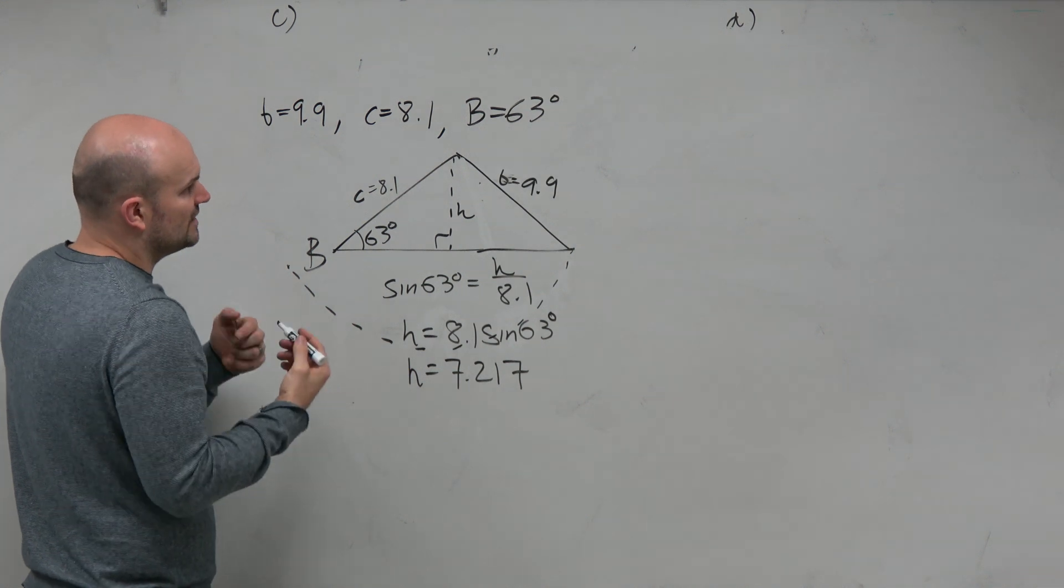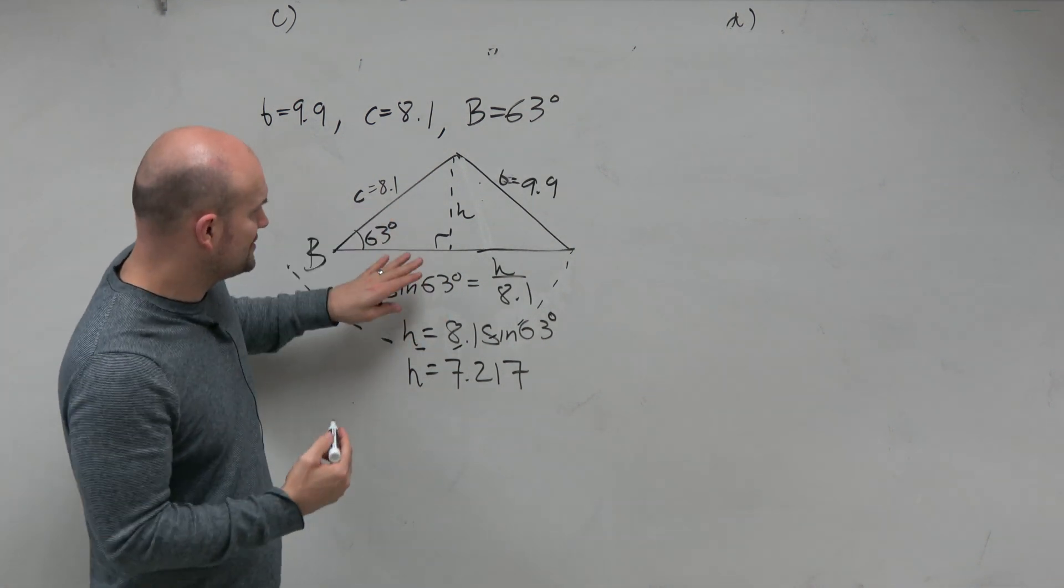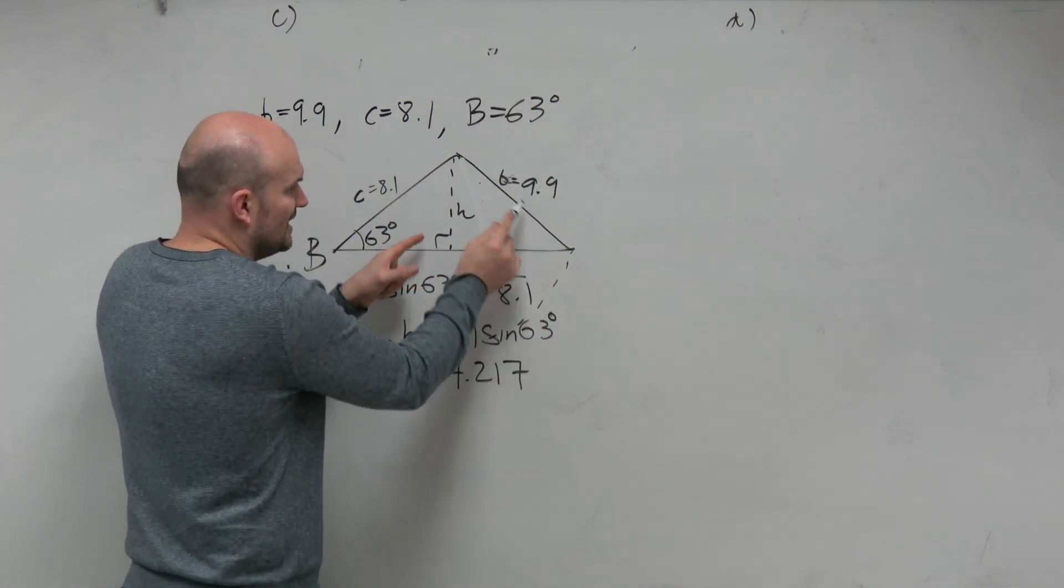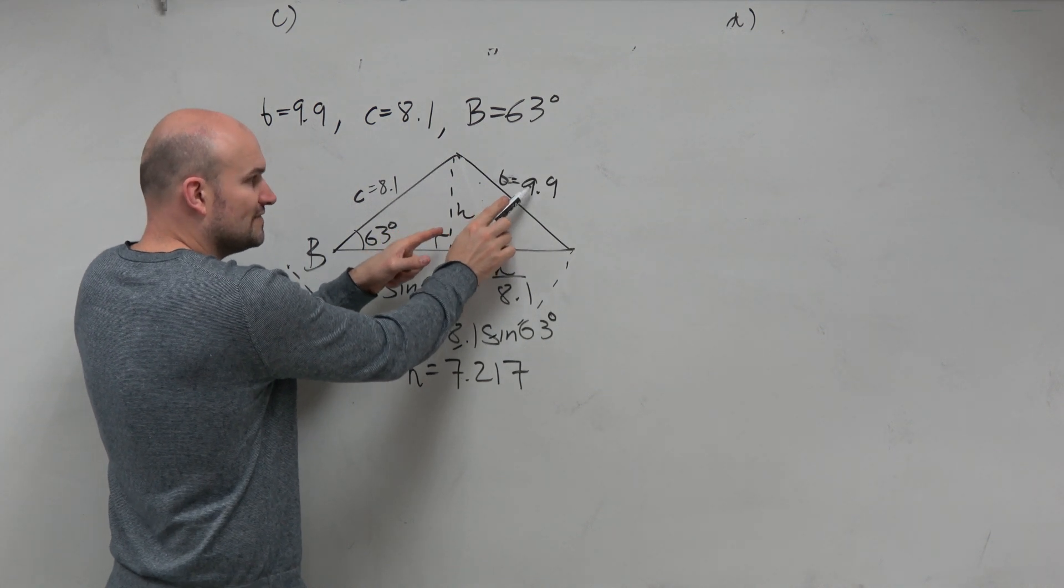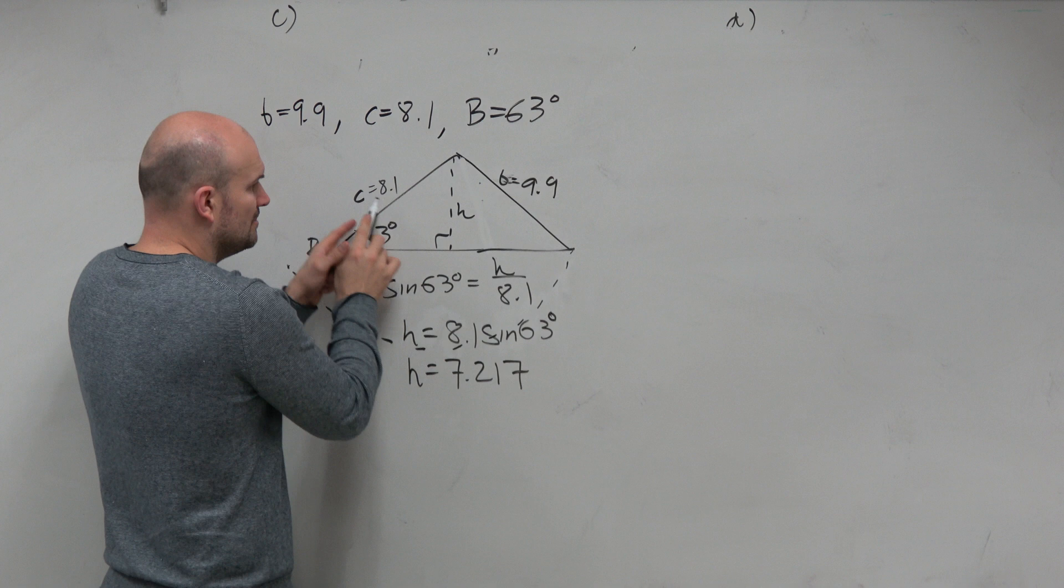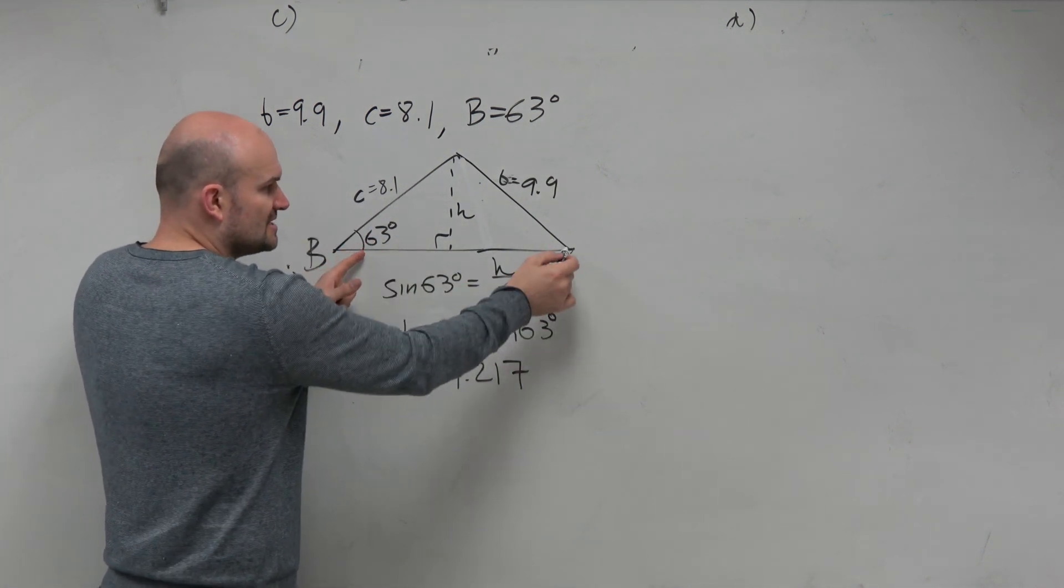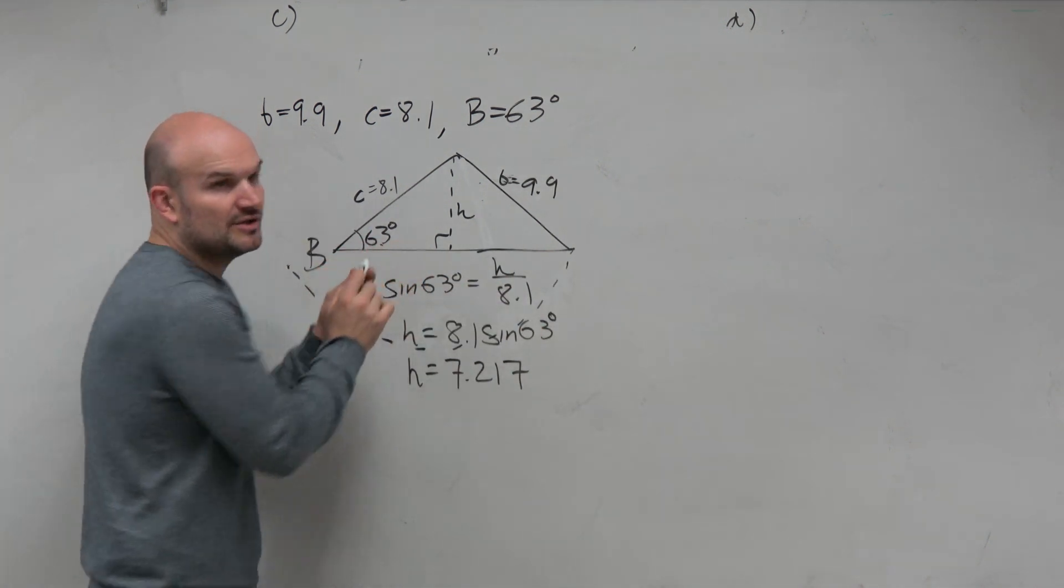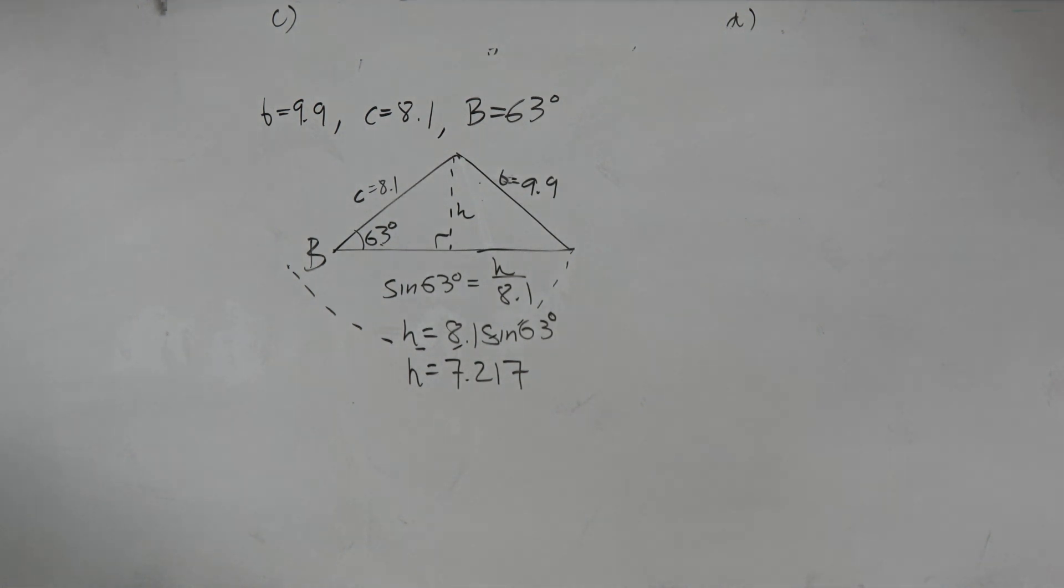Right? So therefore, the only time two triangles exist is if this side length is larger than the height, but smaller than this side. Because then, it would rotate in between here. And you can see in my picture, that's exactly what happens.